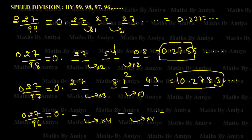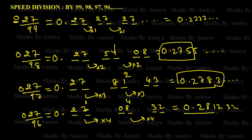For 27 divided by 96: the gap is 4, so 27 × 4 = 108, then 108 × 4 = 432. Adding these: 108 and 432, so we get 0.27, then 108 gives carry, and 432 continues. The result is 0.2812... and so on, taking just the first three or four digits.